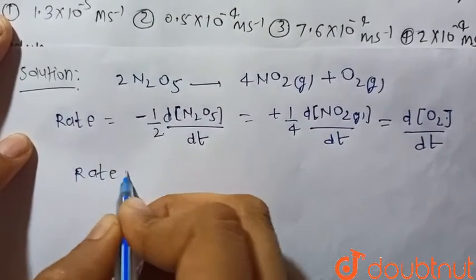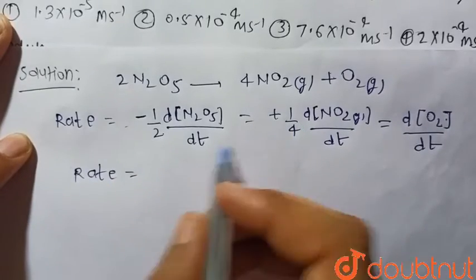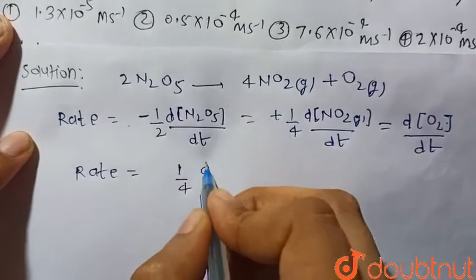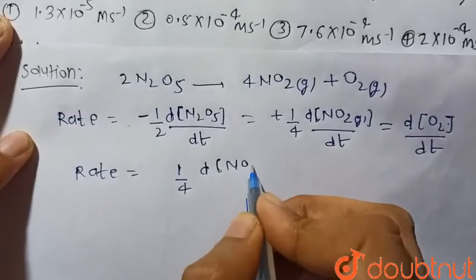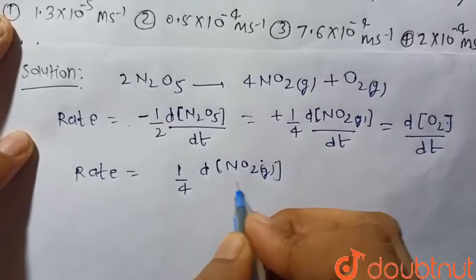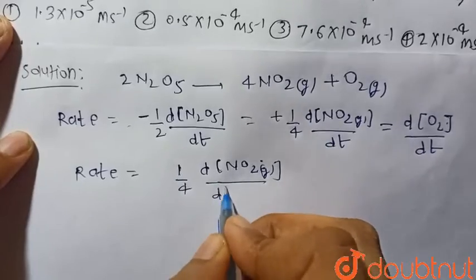So rate of reaction will be equal to 1/4 d[NO2 gas]/dt.